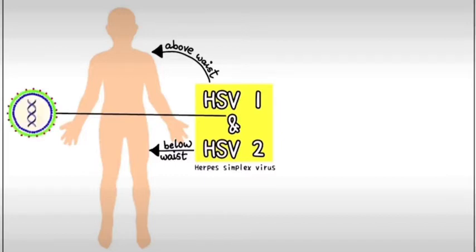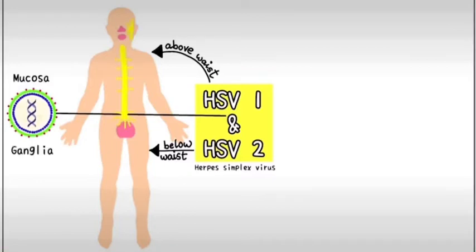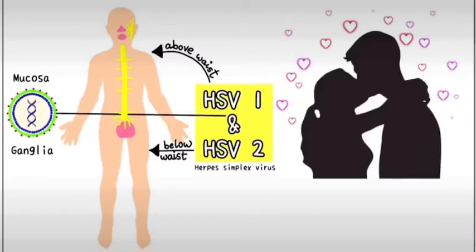The virus reservoir in our bodies is usually in the mucosa and in the ganglia. Herpes infection spreads through close personal contact and sexual activities and is very easily transmitted.